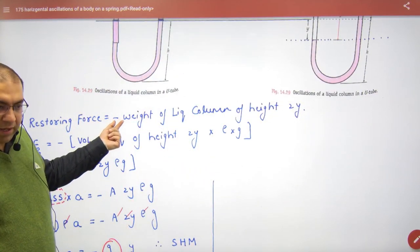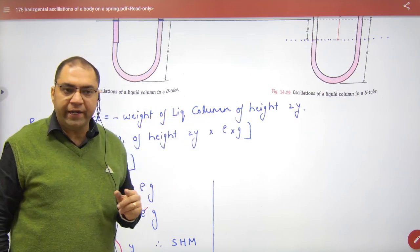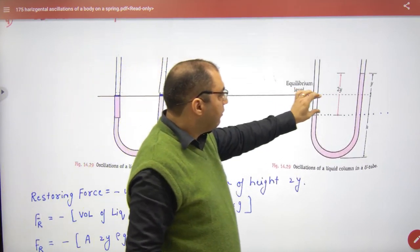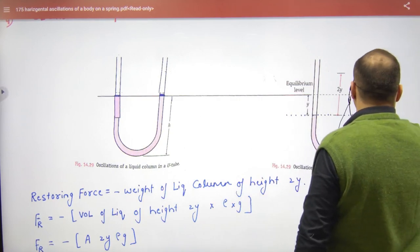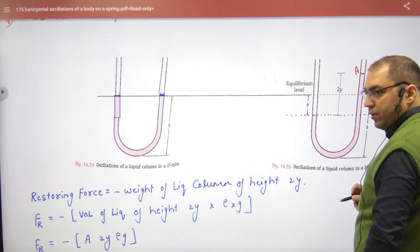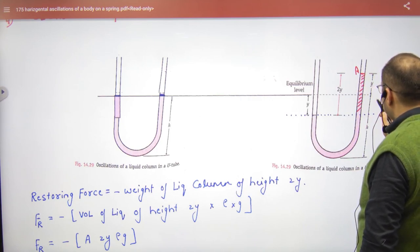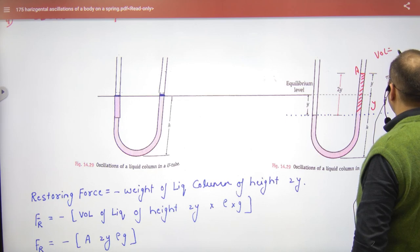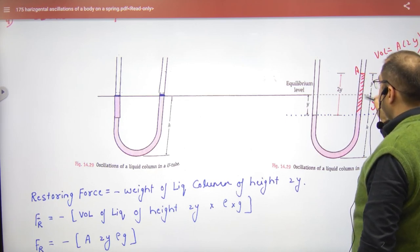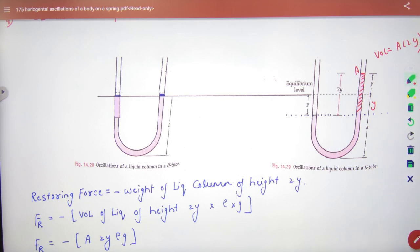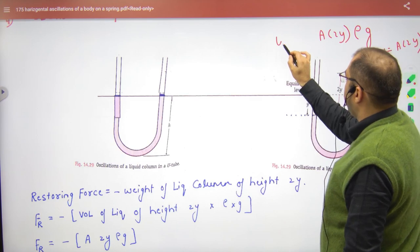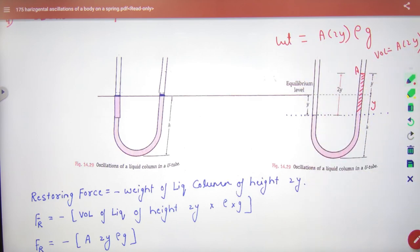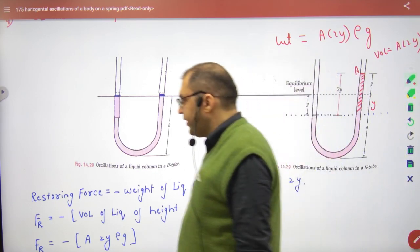For restoring force - weight of liquid column of height 2y. Now imagine that the area of cross section here is A. So what is the volume of this portion? y and y equals 2y. So the volume is area into 2y. Weight is volume into density times g. So its volume is A times 2y, volume into density into g. Its weight is A times 2y times density times g.